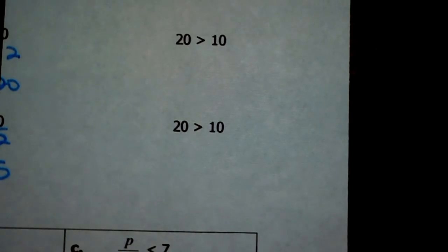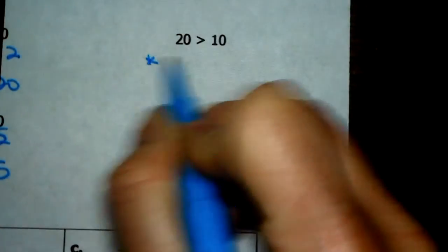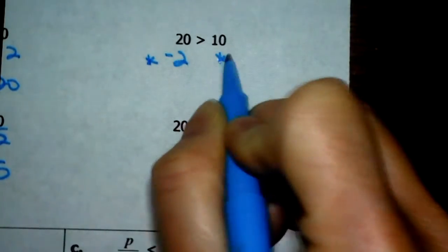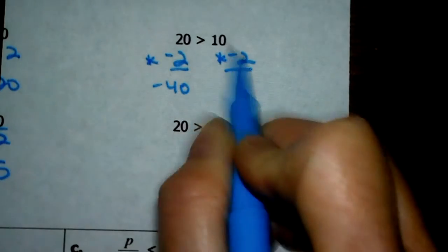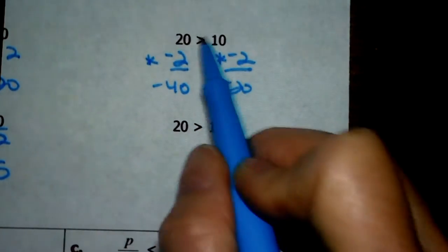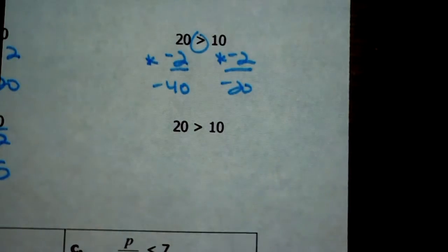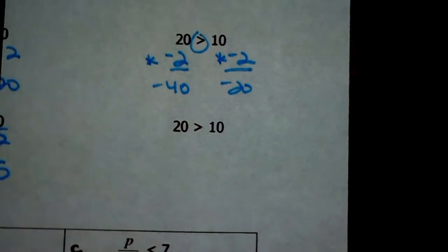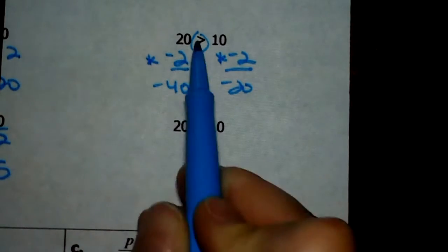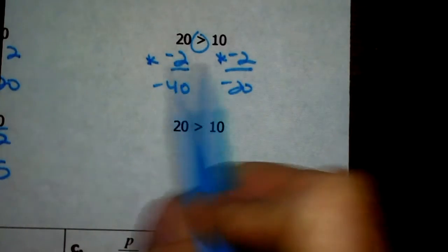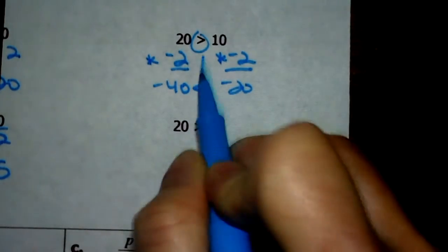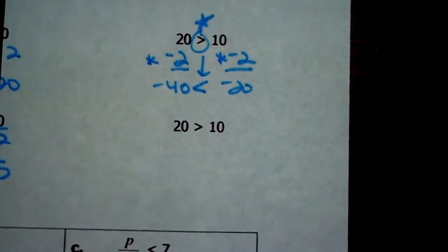So if you multiply or divide each side by the same negative number — if you take 20 and multiply that by negative 2, whatever you do to one side you do to the other — 20 times negative 2 is negative 40, and 10 times negative 2 is negative 20. Now this said that this side was greater than that side. Is negative 40 greater than negative 20? No. Remember, the higher the negative digit, the lower the value. So when you multiply both sides by a negative, you have to flip your sign, otherwise the statement won't be true anymore.